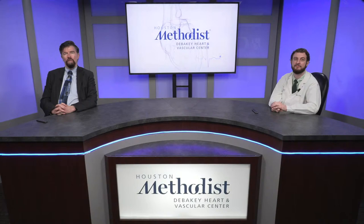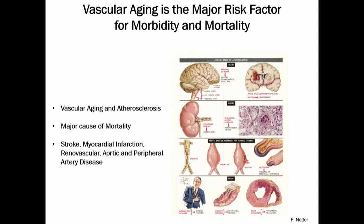Let's begin with this slide that illustrates the problem of vascular aging. Vascular aging is the major risk factor for morbidity and mortality throughout the world. Vascular aging can cause cerebral infarction, stroke, renal vascular disease and chronic renal failure, peripheral arterial disease and aortic aneurysm, ischemic bowel disease, and of course myocardial infarction — a major cause of morbidity and mortality — which can result in sudden death or heart failure.